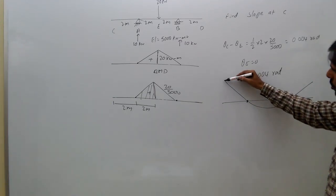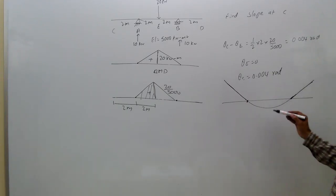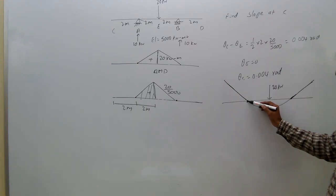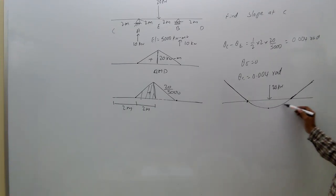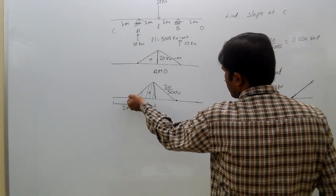That means from A to C, slope will not change. This is 20 kWh, so slope will change from center to this point only. After that, because curvature diagram is nothing there here, so slope continues.